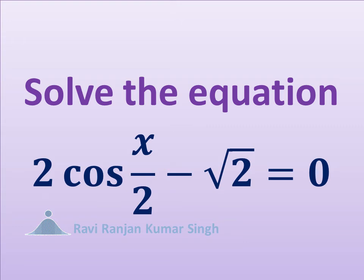In this video, we will learn to solve the multiple angle equation 2 times cosine of x upon 2 minus square root of 2 is equal to 0.